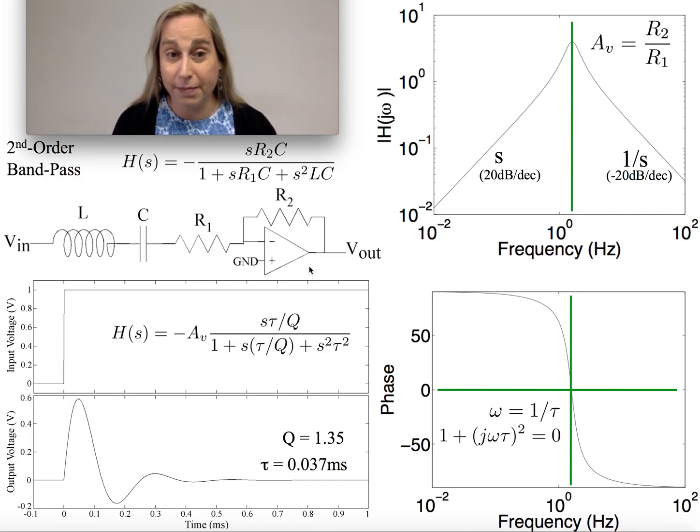You could have done a bandpass with just an L, C, and R, but it's interesting to see what happens when you put this with an op-amp. One thing you'll notice is I have the L, C, and R, but I also have an R2 here.